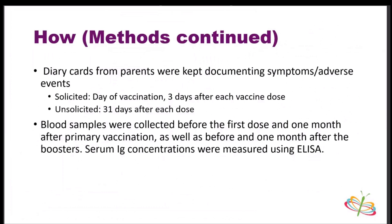Diary cards were kept by parents documenting symptoms and adverse events. They were looking at solicited events — expected occurrences such as local symptoms like pain, redness, and swelling, versus generalized symptoms like temperature irregularities, fussiness, drowsiness, and loss of appetite — documented from the day of vaccination through three days after each dose. They also looked at unsolicited events, which are symptoms or adverse events not necessarily expected, documented for 31 days after each dose.